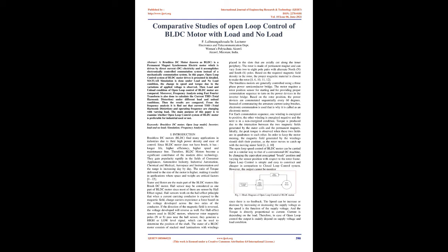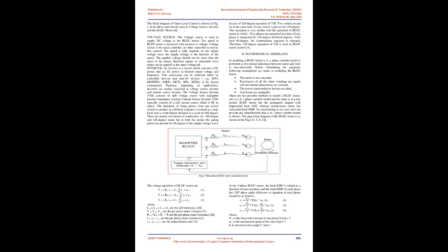The stator of a BLDC motor consists of stacked steel laminations with windings placed in slots that are axially cut along the inner periphery. The rotor is made of permanent magnet and can vary from 2 to 8 pole pairs with alternate north (N) and south (S) poles. Based on the required magnetic field density in the rotor, the proper magnetic material is chosen to make the rotor.